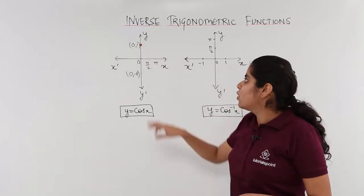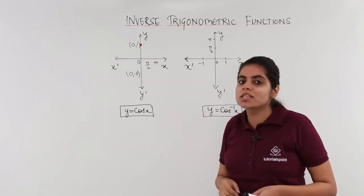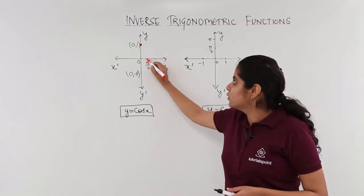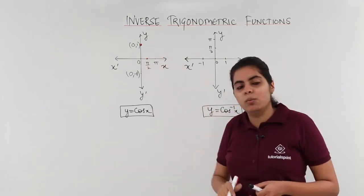What about the next value? What is cos 90? Cos 90 is 0. So cos pi by 2 is 0. One more dot.